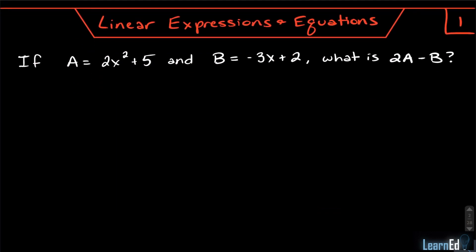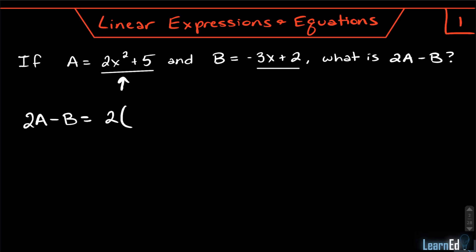Getting right into our first problem on linear expressions and equations: if a is 2x squared plus 5, and b is negative 3x plus 2, then what's 2a minus b? To figure this out, you just have to plug in — you know what a is and what b is. So 2a minus b is equal to 2 times (2x squared plus 5), and then we subtract b, which is (negative 3x plus 2). This is just subtracting polynomials, and we need to distribute the 2 first.